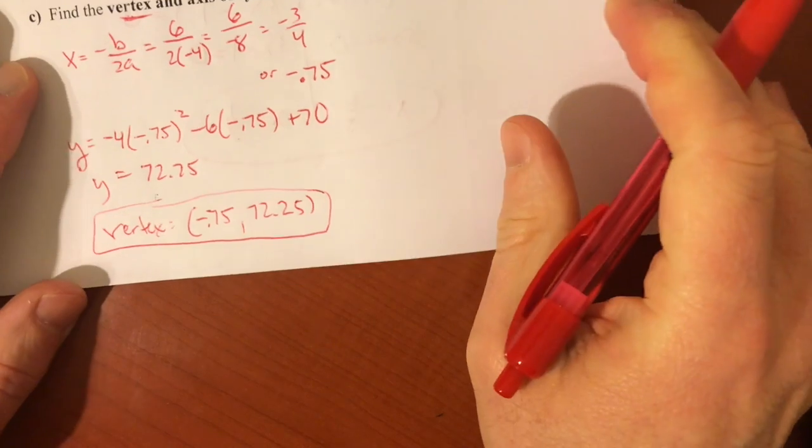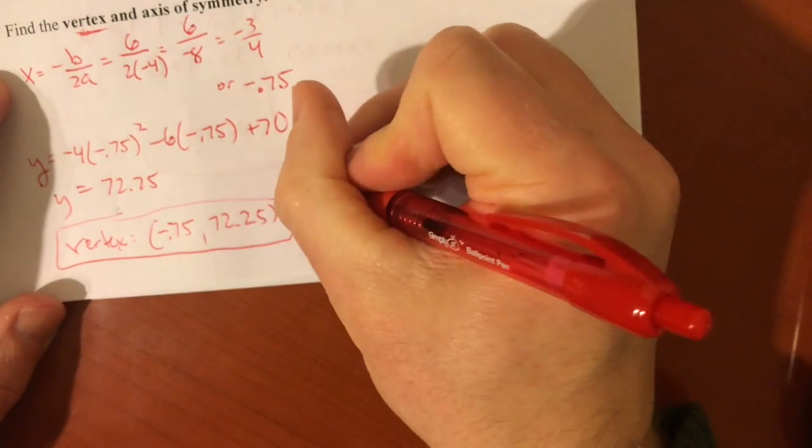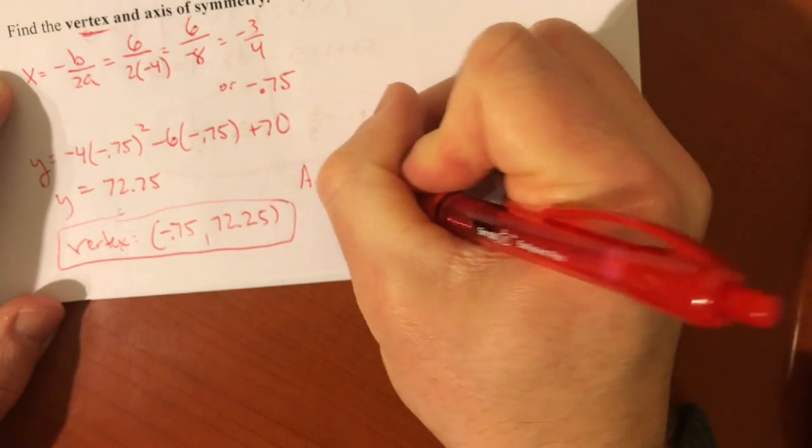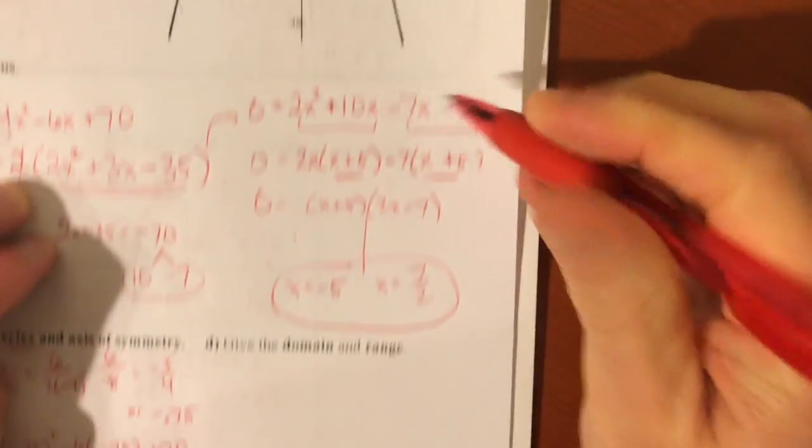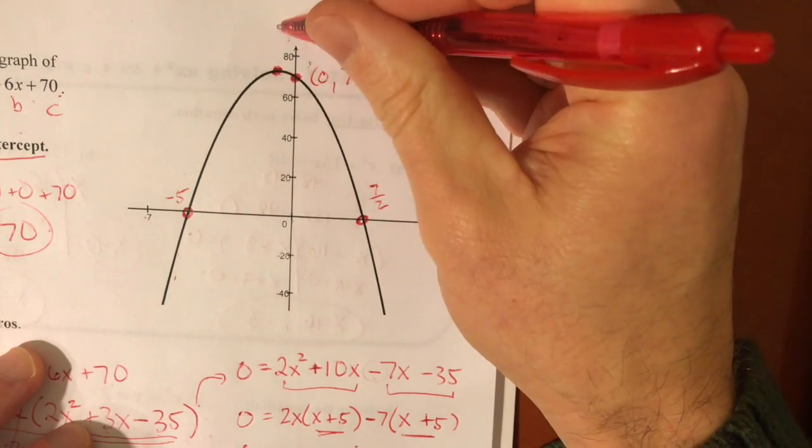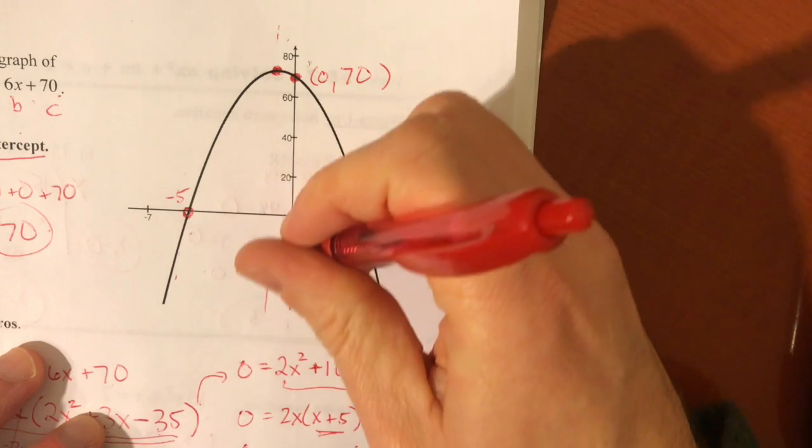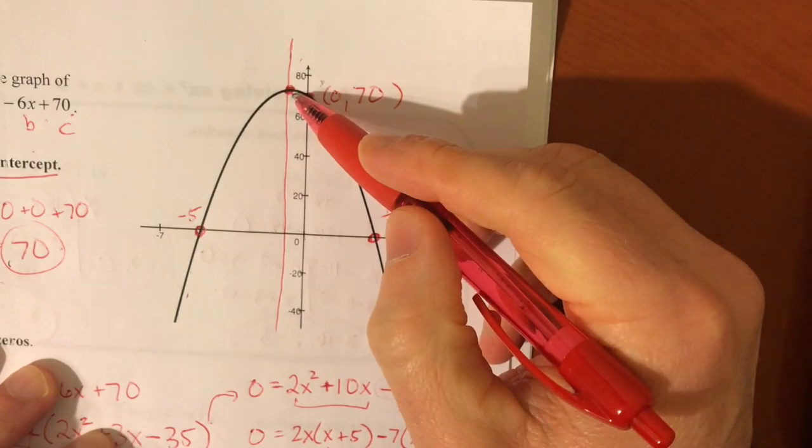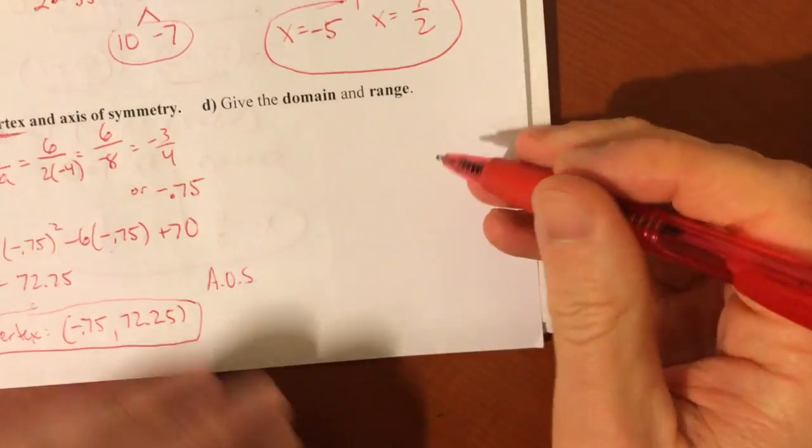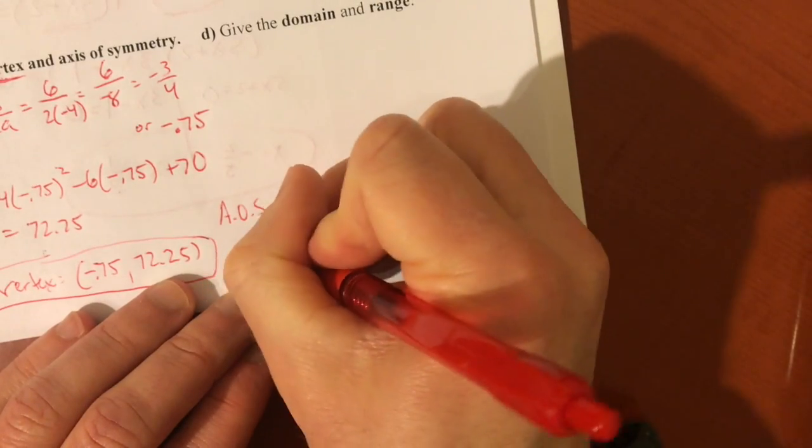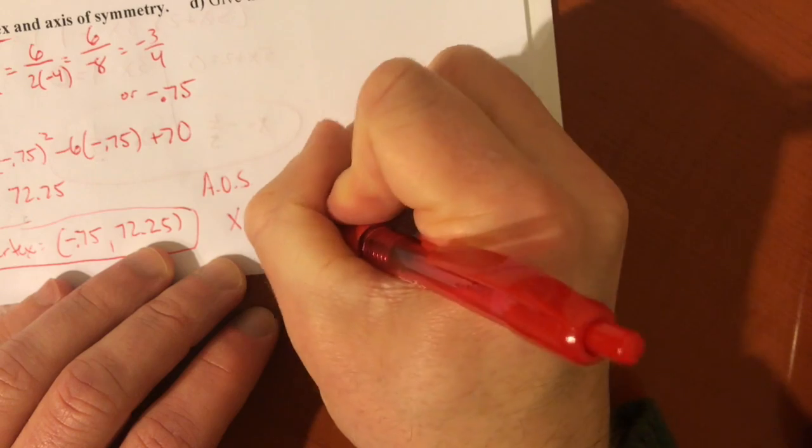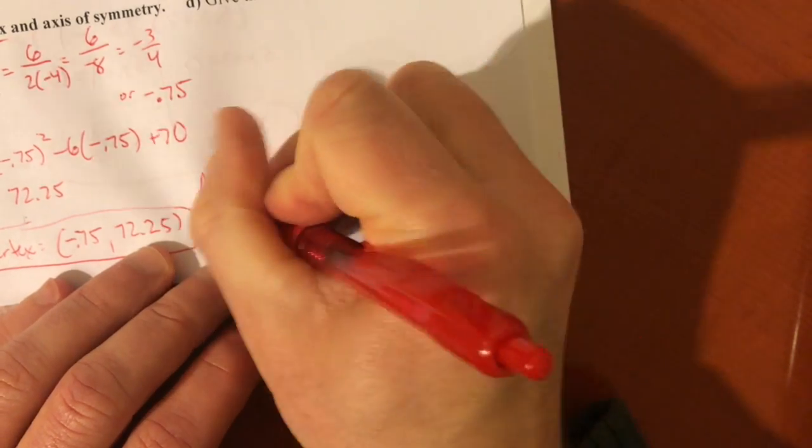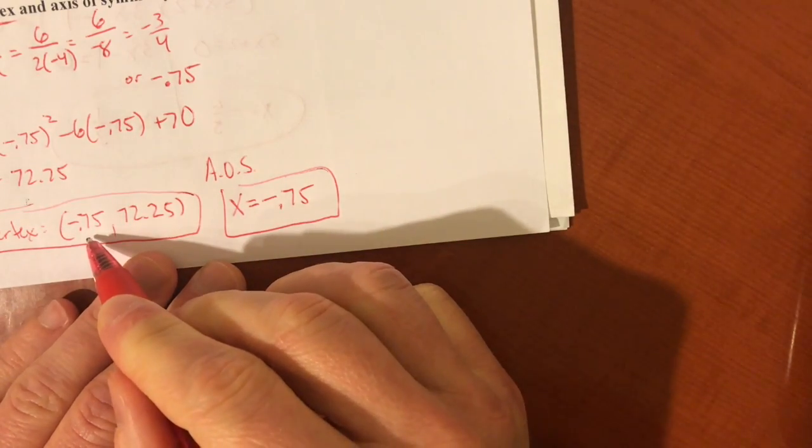And we also asked for the axis of symmetry. The axis of symmetry, if you'll remember, maybe it's been a while, the axis of symmetry is that vertical line that goes right down the middle, right? And it goes right down the middle. It passes right through that vertex, which is why they're always related. So the axis of symmetry is x equals negative 0.75. It's the same x value as your vertex.